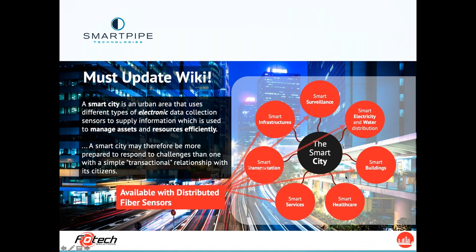I also referred to Wikipedia for a definition: a smart city is an urban area that uses different types of electronic data collection sensors to supply information which is used to manage assets and resources efficiently. It means that we use a number of different types of sensors. At the exhibition, I saw a lot of processes that use cameras to monitor the activities of people or traffic flows, and also things like radar, infrared sensors, and other sensors that tune into communications in a city to inform, provide knowledge, and make decisions.